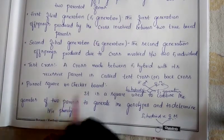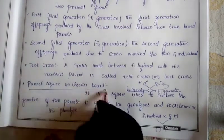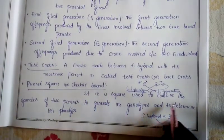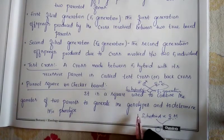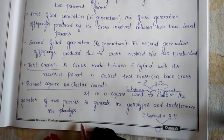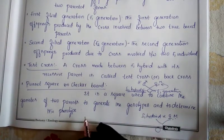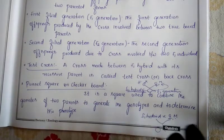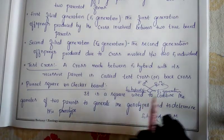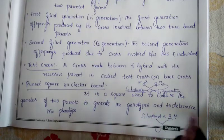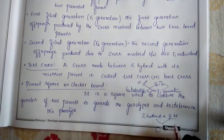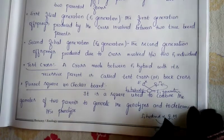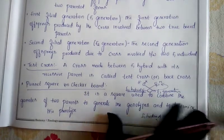Punnett square, also called checkerboard, is a square used to combine the gametes of two parents to generate the genotype and determine the phenotype. In the next class when we do monohybrid and dihybrid crosses, I will show you what the checkerboard is.